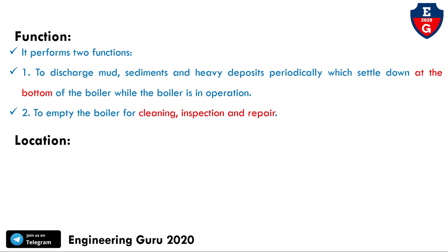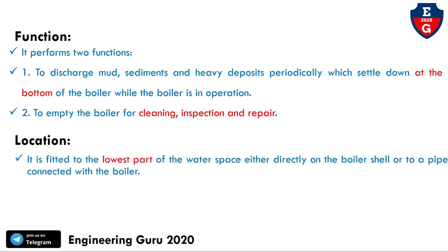Now for the location: the blow-off cock is fitted to the lowest part of the water space, either directly on the boiler shell or to a pipe connected with the boiler. This covers the construction, working, function and location of the blow-off cock.